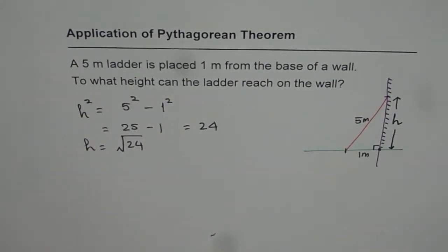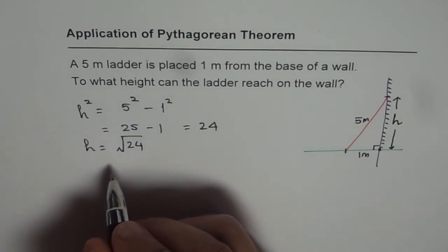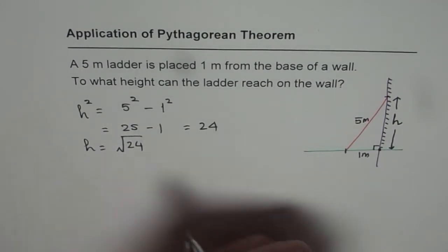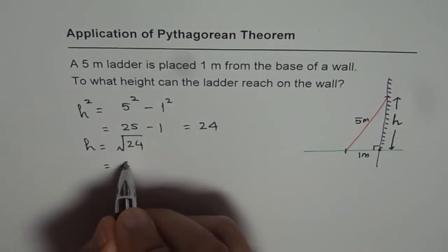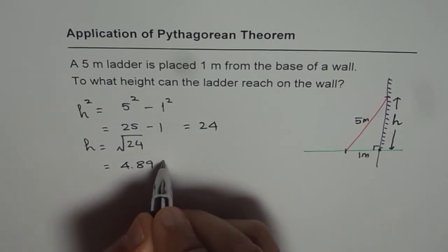So that is our answer. We can use calculator and figure it out. Square root of 24 is equal to 2 square root 6 or it is equal to 4.8989. So I can write this as 4.8989.